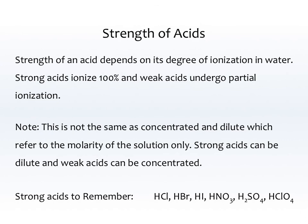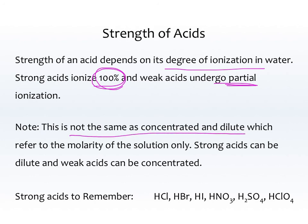The strength of an acid depends on its degree of ionization in water. Strong acids ionize 100%, meaning 100% ions. Weak acids only undergo partial ionization. Note that this is not the same as concentrated and dilute, which refer to the molarity of the solution only. Strong acids can be dilute, and weak acids can be concentrated. The word 'strong' refers to how much it ionizes, not how dangerous it is.